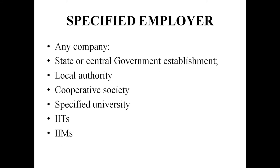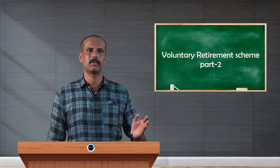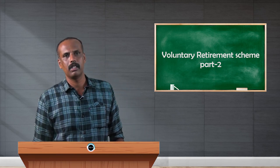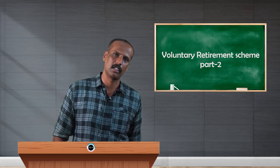Regarding specified employers: who qualifies as a specified employer? Any company, any establishment of state or central government, local authority, cooperative society, specified universities, IIMs of all states, and IITs of all states — these are called specified employers. If an employee takes VRS while working under a specified employer, the exemption provisions apply.